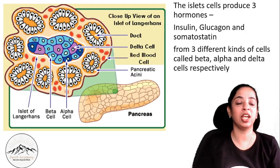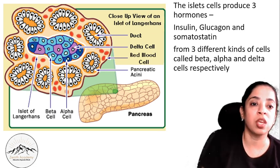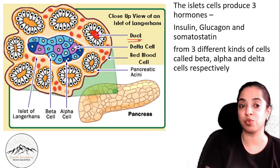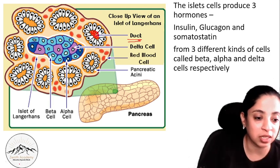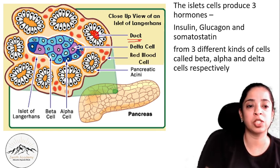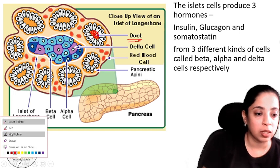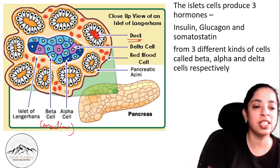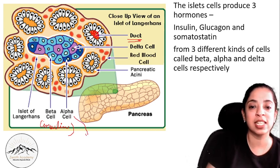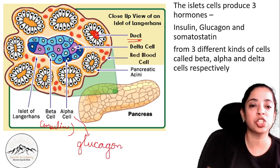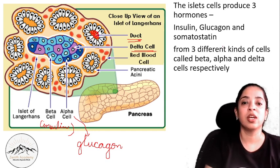Here is a detailed picture of the pancreas. You can see the duct from where pancreatic juice is poured. In the middle, you can see a special group of hormone-secreting cells. The light blue ones are beta cells, which secrete insulin. The dark blue ones are alpha cells, which secrete glucagon. And the purplish-colored delta cells secrete somatostatin.